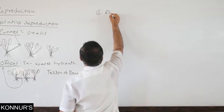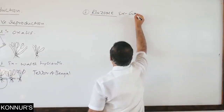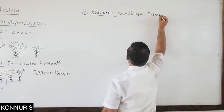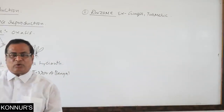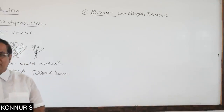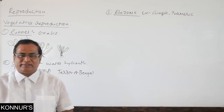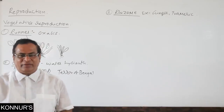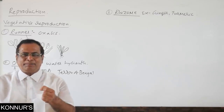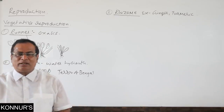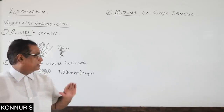Rhizome is an underground stem modification — examples: ginger and turmeric. In raw turmeric, you can notice nodes and internodes; they are branched like fingers. At the nodal region there is a colorless, papery scaly leaf, and small buds are also present at nodal regions for vegetative propagation.